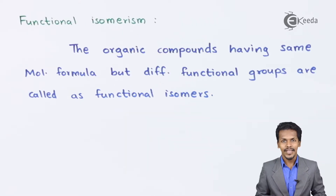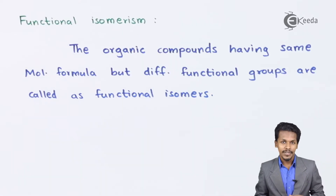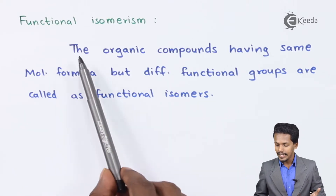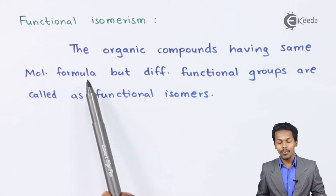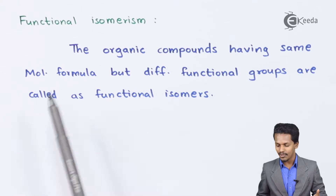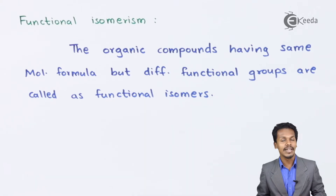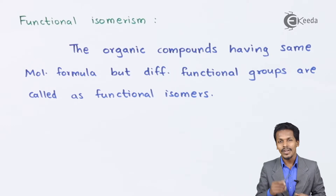Now let us talk about functional isomers. Organic compounds having the same molecular formula but different functional groups are called functional isomers, and this phenomenon is known as functional isomerism.